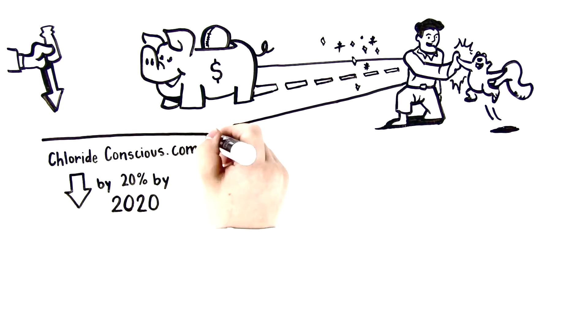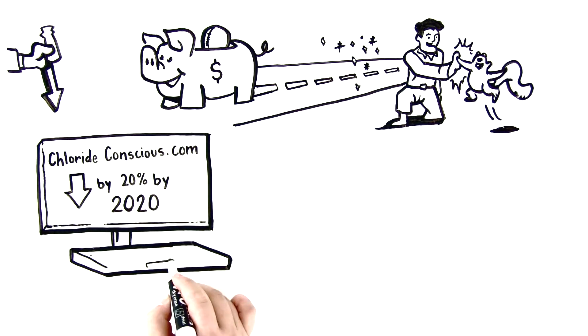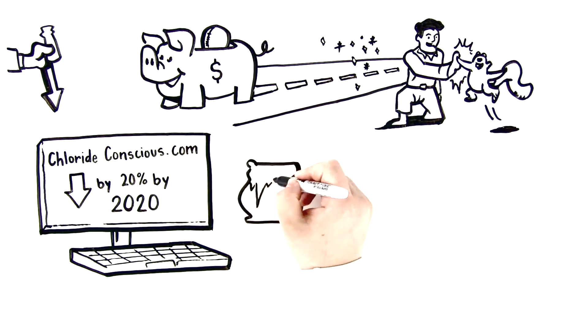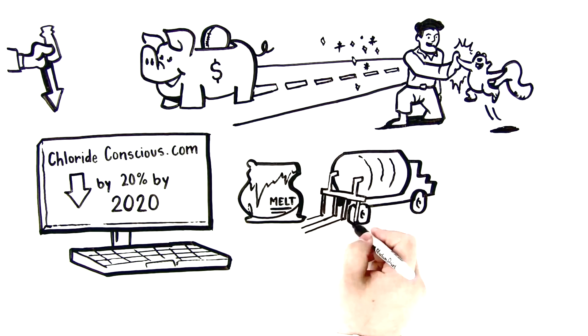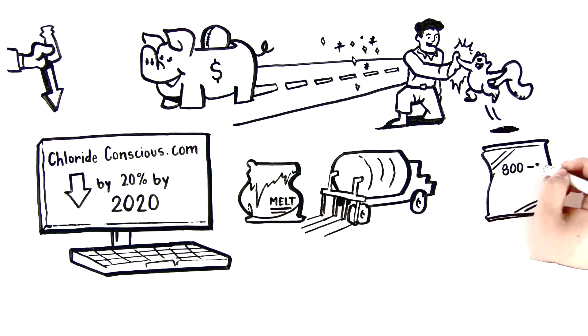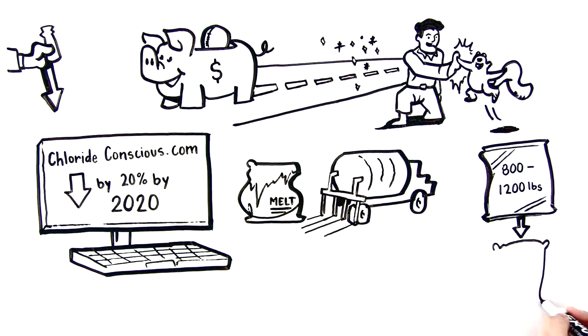we've got a goal to reduce chloride emissions by 20% by 2020. Learning how ice melters work, using liquids for anti-icing, and pre-wetting your salt can shift the snow professionals' supposed need for salt from 800 to 1,200 pounds per acre to less than 400 pounds per acre.